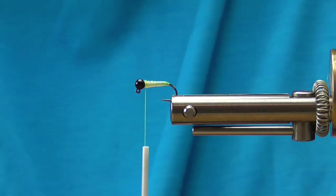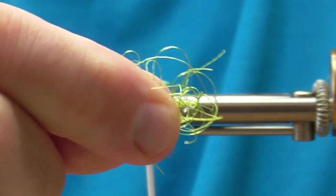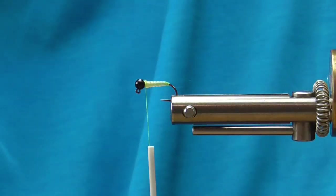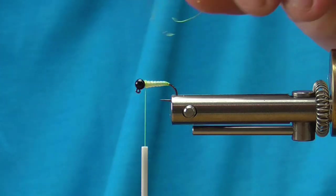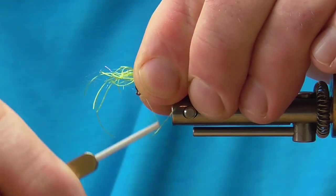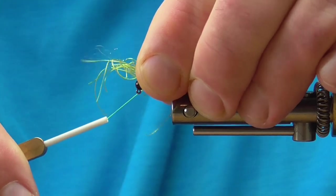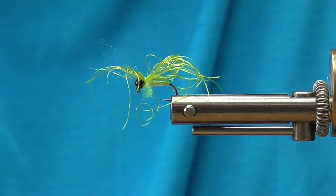And I'm basically going to get it together in just one pinch with a little bit of that ice dub and a little bit of that shaggy dub. And we're going to place it on top behind the bead and come over with a couple turns.